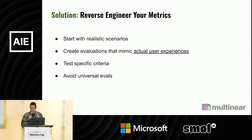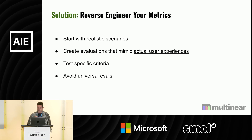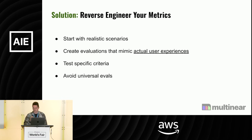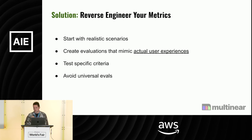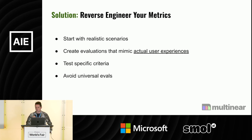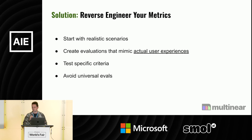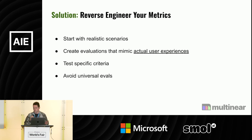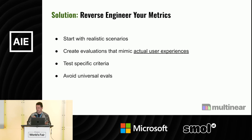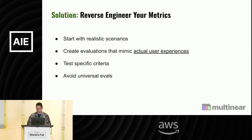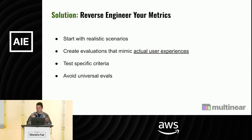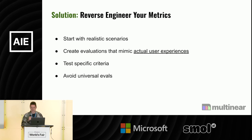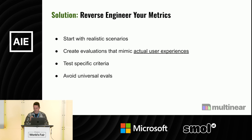My experience was to start with real-world scenarios. You need to reverse engineer your metrics, and your metrics should be very specific to your end goal — they should come from the product experience and from business outcomes. If your solution is a customer support bot, you need to figure out what your users want and how you can mimic it. Instead of measuring something average or generic, you need to measure very specific criteria, because universal evals don't really work.